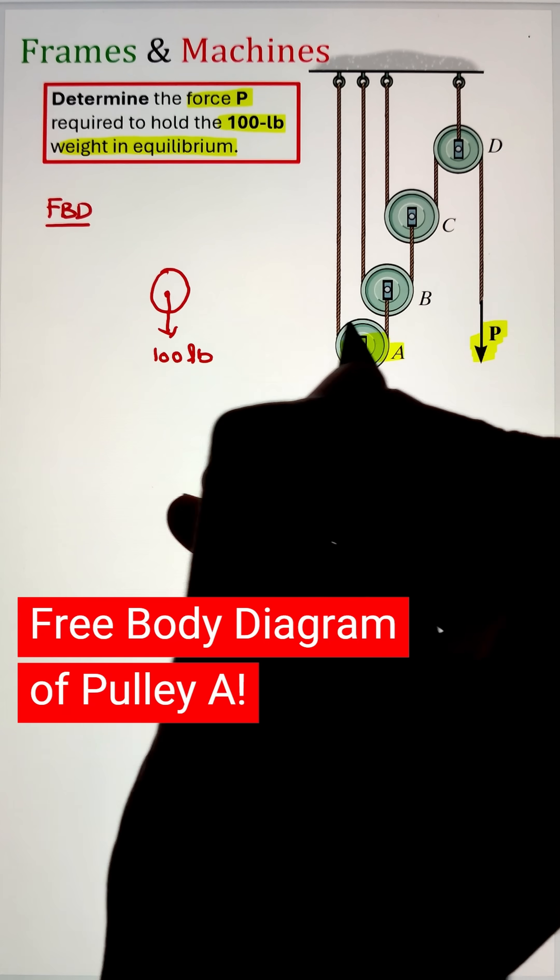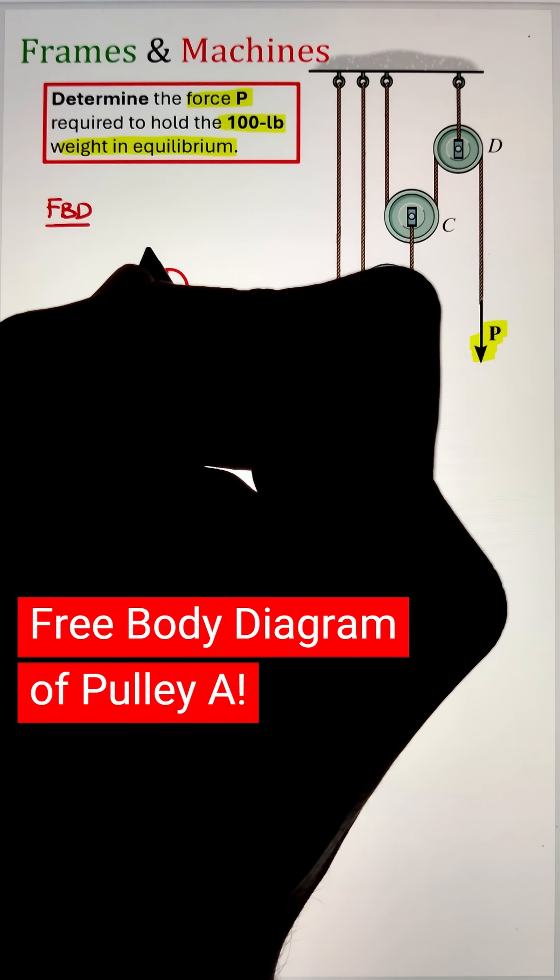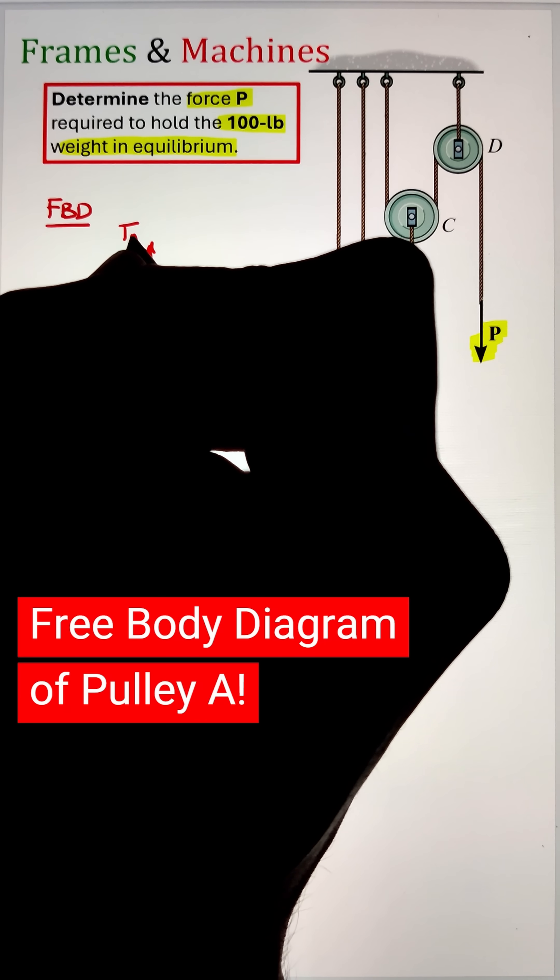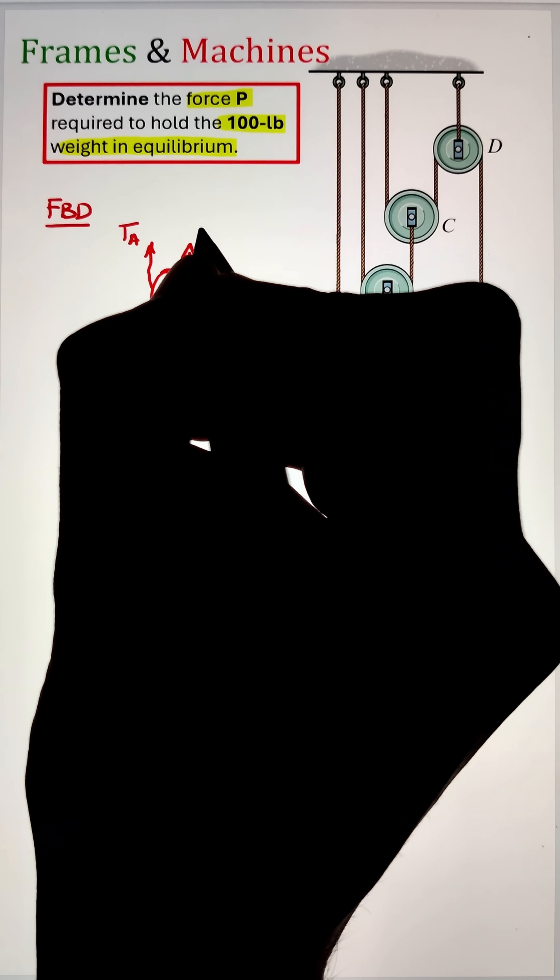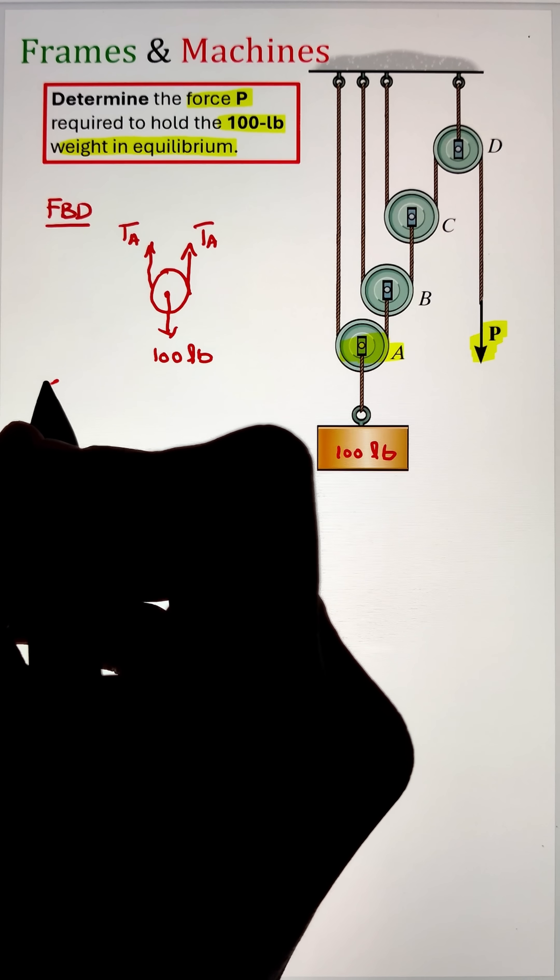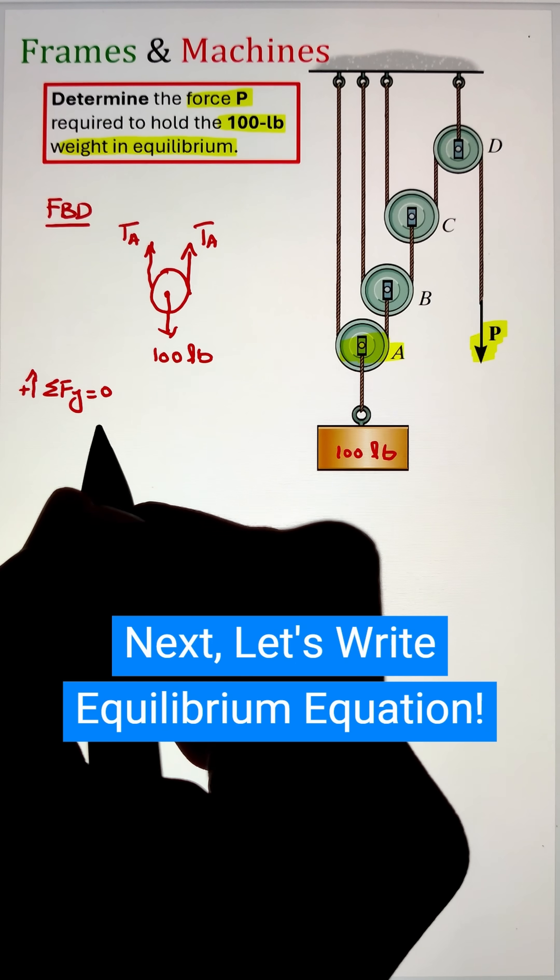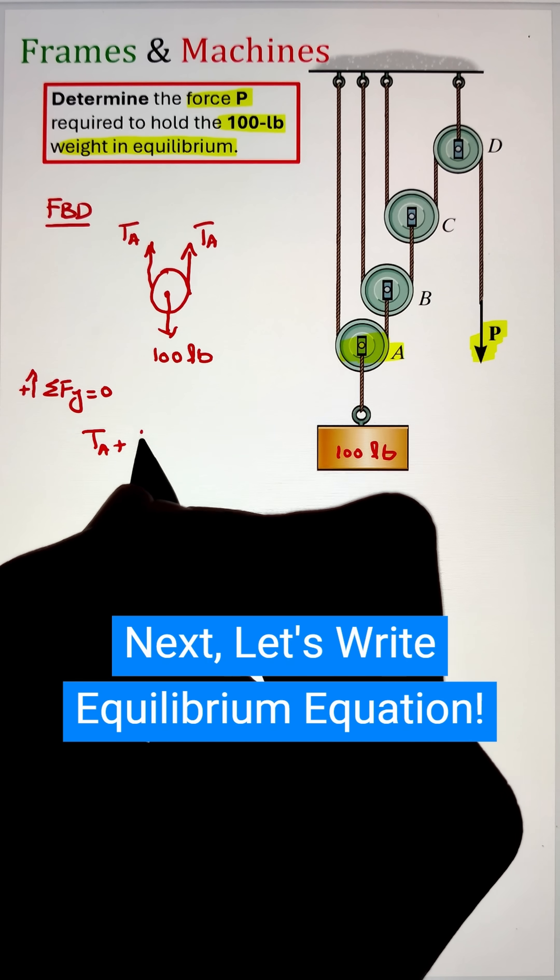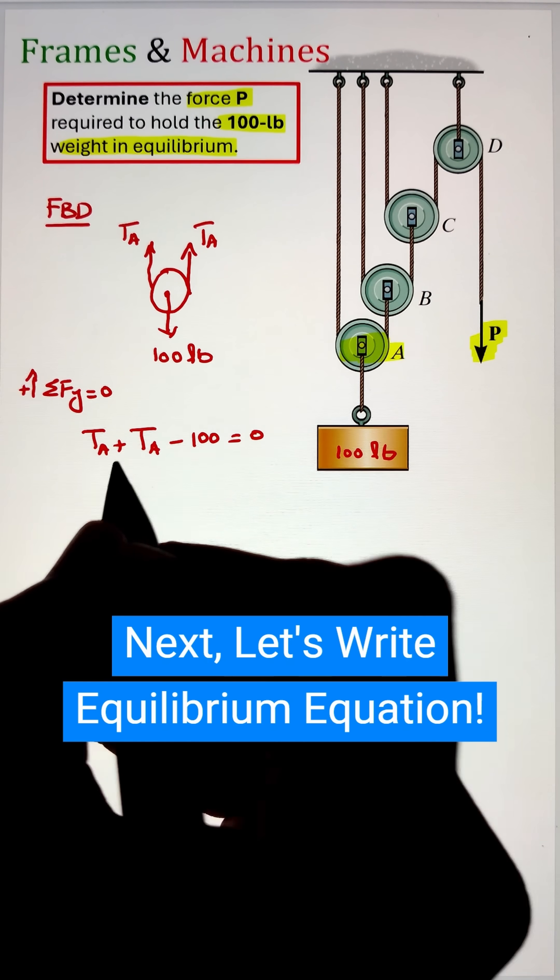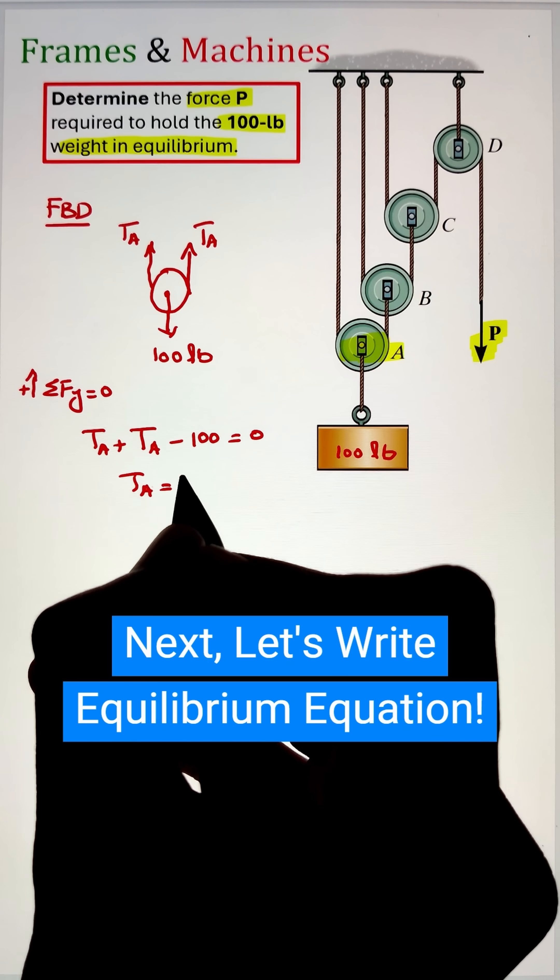For the free body diagram of pulley A, the weight of 100 pounds is acting vertically downward and I have two ropes going in the upward direction. For the rope, the force will always be in tension, which is why they are going away from the pulley, given as T_A. We can apply the equilibrium condition to solve for this tension, which comes out as 50 pounds.